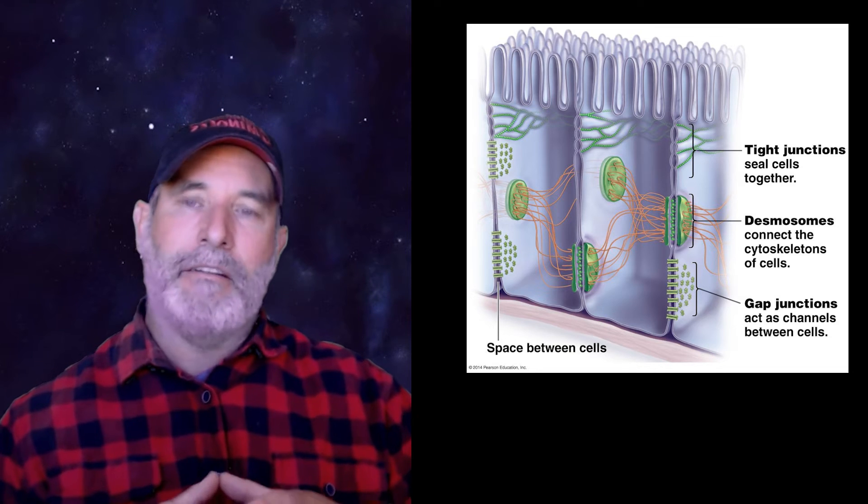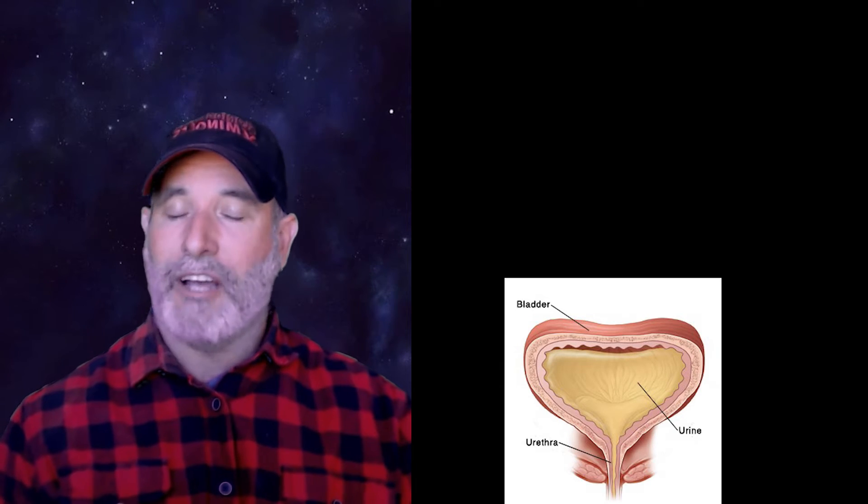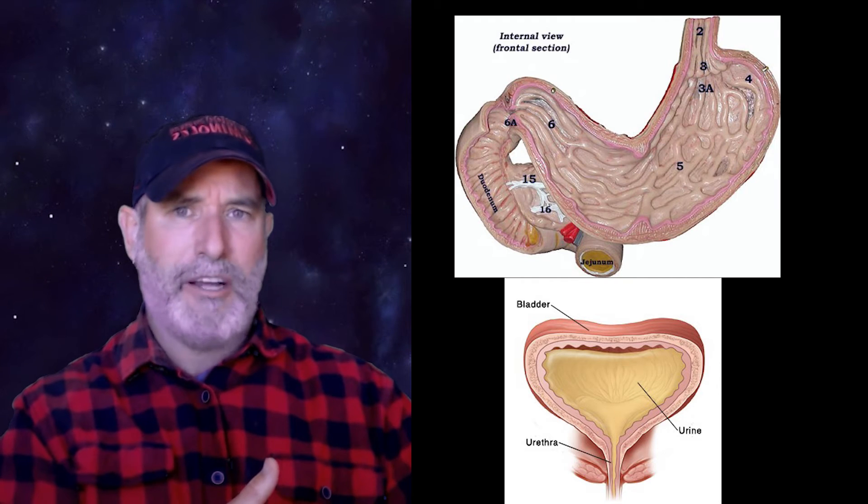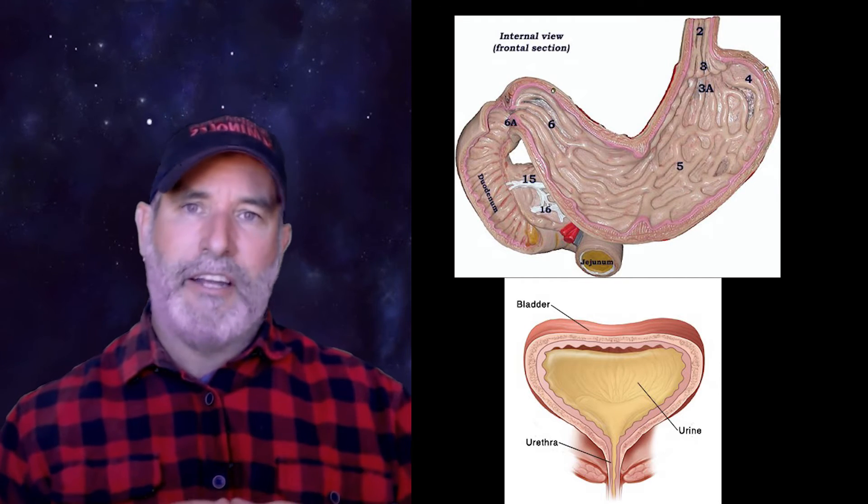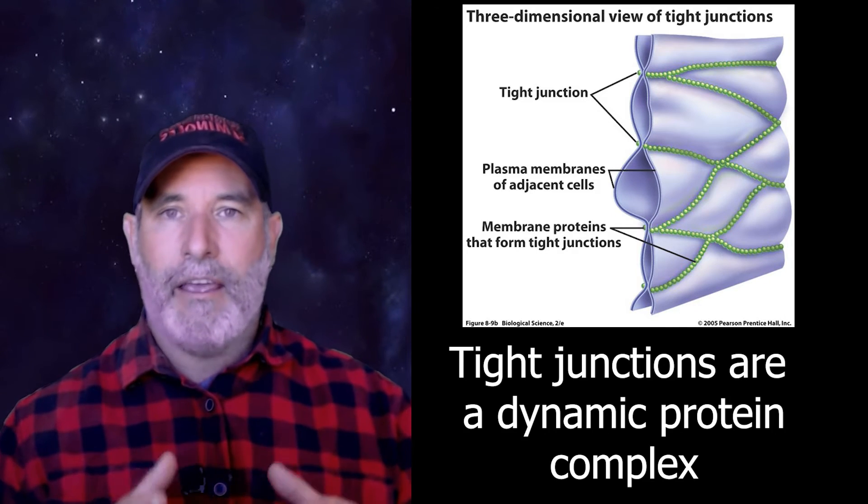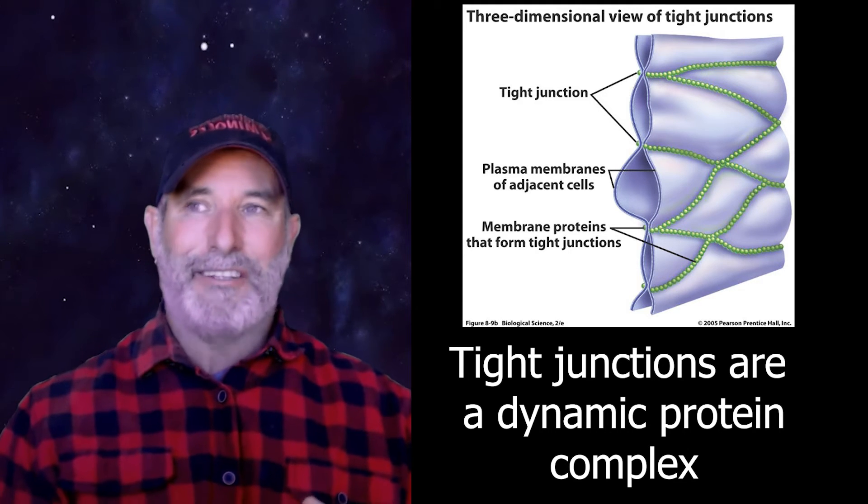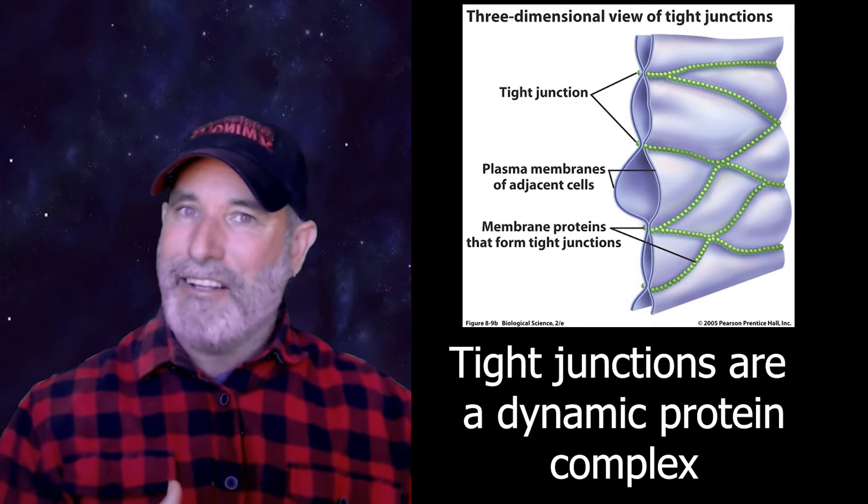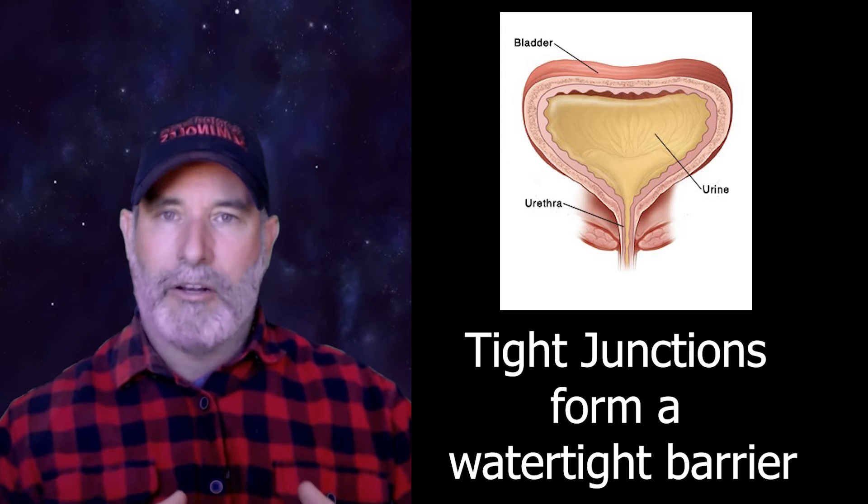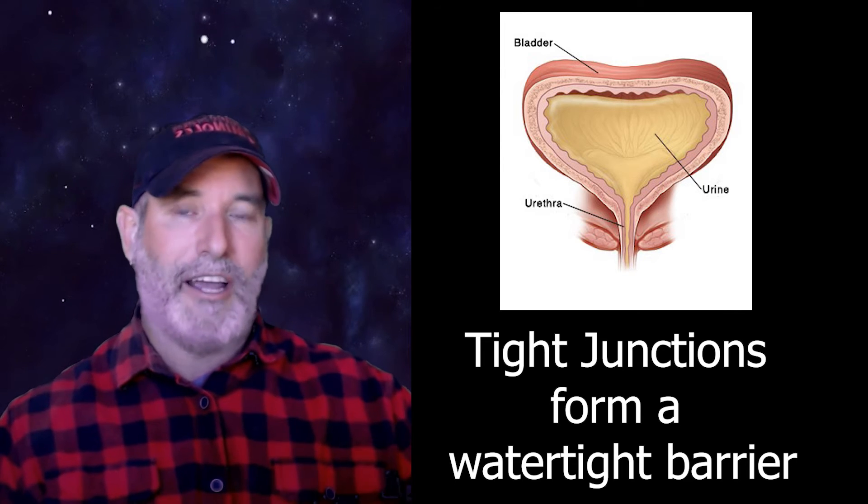So what exactly is a tight junction? And tight junctions form these watertight barriers. Now, you can probably think of where you need some watertight barriers. Your bladder, your intestines, your stomach, especially your stomach. So another thing that's interesting about these tight junctions is that they are dynamic. And even though there's about 40 different proteins involved with making tight junctions, the tight junctions are actually slightly different between your bladder or your intestines or your stomach. So think about your bladder. You don't want it to leak hardly any water at all. So they will form this very tight, watertight barrier.